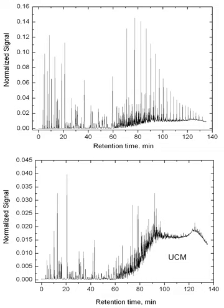The resolved components appear as peaks while the UCM appears as a large background platform. In non-biodegraded oils the UCM may comprise less than 50% of the total area of the chromatogram, while in biodegraded oils this figure can rise to over 90%.